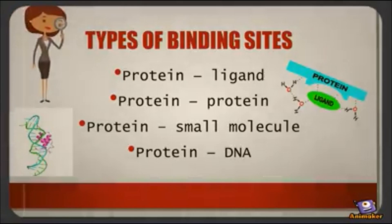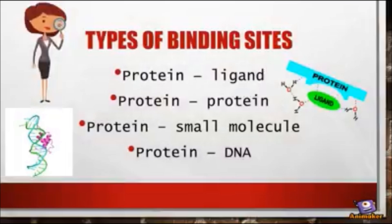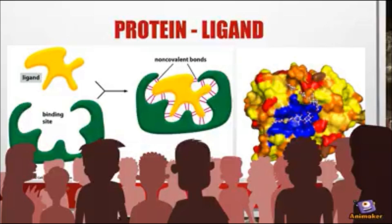Let's look at a few types of binding sites: protein-ligand, protein-protein, protein-small molecule, and protein-DNA. Look here at how protein-ligand interacts — it is through the formation of non-covalent bonds.